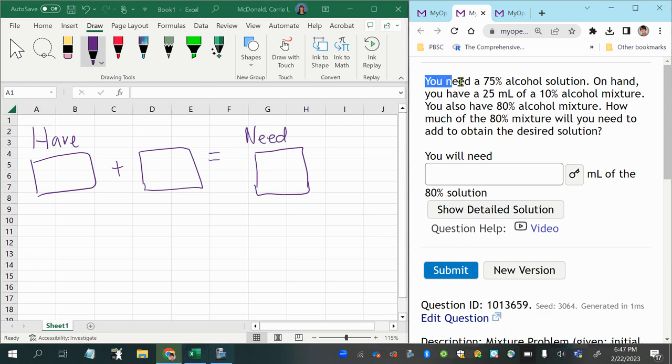In this problem, it says you need a 75% alcohol solution. So in my very rudimentary sketch here, I have the right side of my equal sign labeled as need.